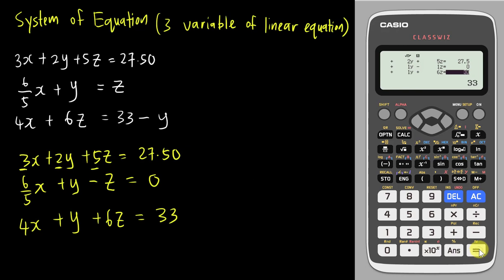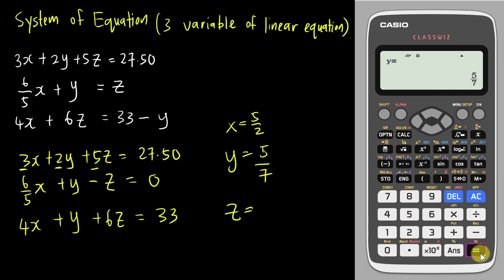Now you can press equal one more time then the calculator will tell you all the answers for x, y and z. The calculator tells me my x is 5/2, my y will be 5/7, and then my z will be 26/7.